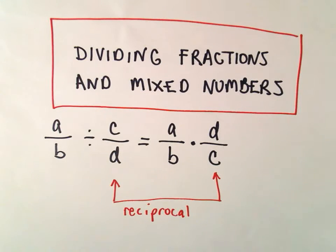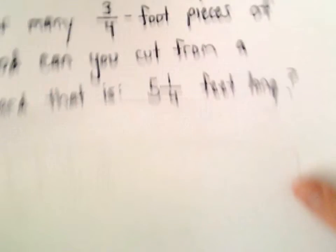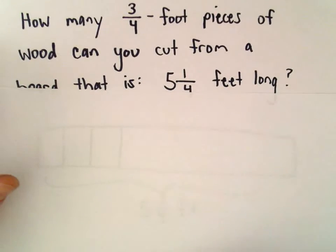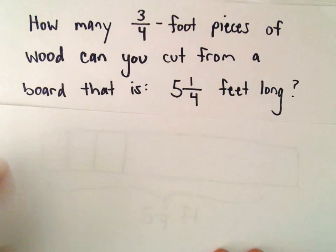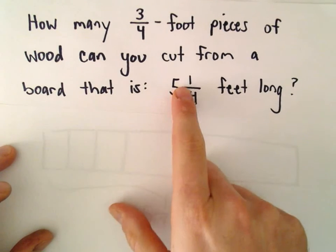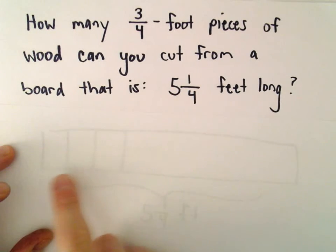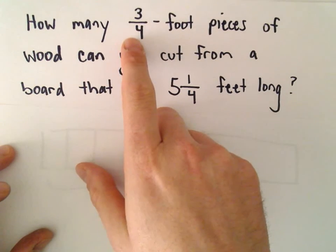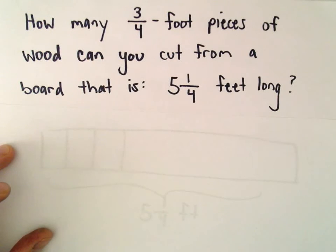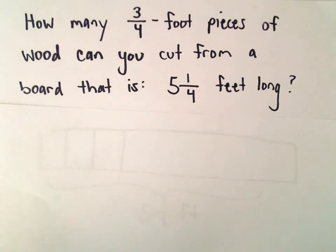Alright, so just a little word problem here involving fractions and division of fractions. Suppose we've got a board that's five and one-fourth feet long. We're going to cut this up into little planks that are three-quarters of a foot long. And we want to know how many of these little planks can we get.